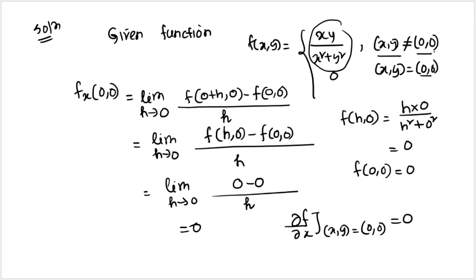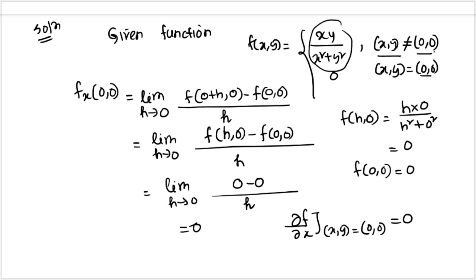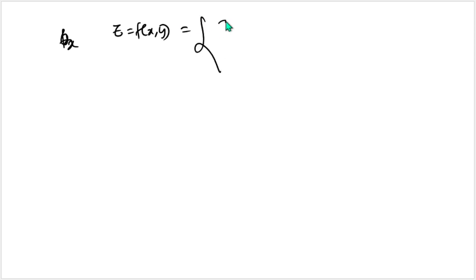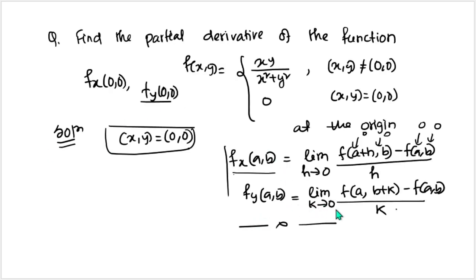Similarly, using the other formula, the partial derivative with respect to y: fy(0,0) = limit as k→0 of [f(0, 0+k) − f(0,0)] / k = limit as k→0 of [f(0, k) − f(0,0)] / k. The given function is f(x,y) = xy/(x²+y²) for (x,y) ≠ (0,0), and 0 at (0,0).